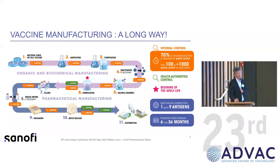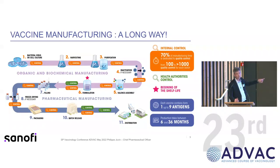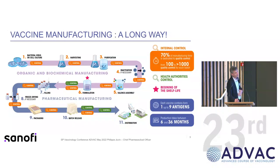Antigens are sensitive — I forgot to mention — to temperature. They must be kept at 5 degrees, plus or minus 3 degrees, including during these manufacturing steps. This is one of the key characteristics of vaccine manufacturing.